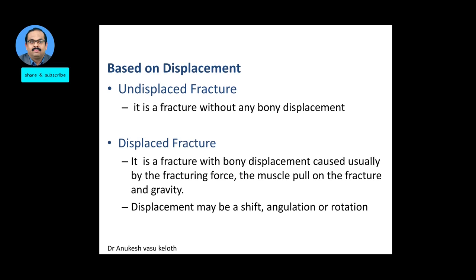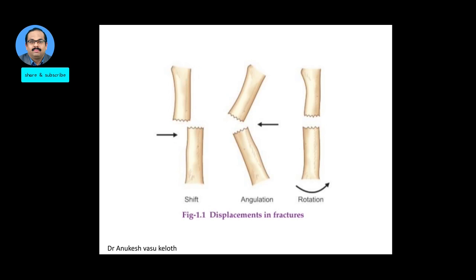Based on displacement, you have the undisplaced fracture and the displaced fracture. Undisplaced means a fracture without any displacement of the bony fragments. Displaced means a fracture with bony displacement caused usually by the fracturing force, muscle pull on the fractured segment, or gravity. Displacement may be a shift, an angulation, or a rotation.